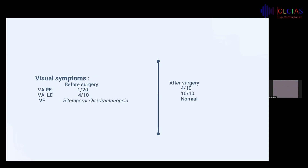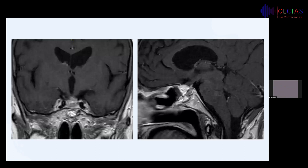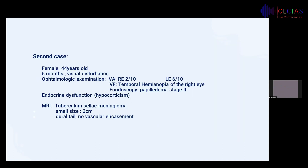The visual symptoms were improved after surgery: visual acuity became 4/10 on the right side and 10/10 on the left side, and the visual field was normal. This is the postoperative MRI.